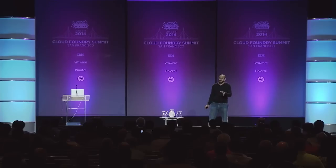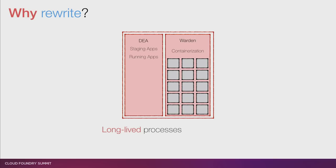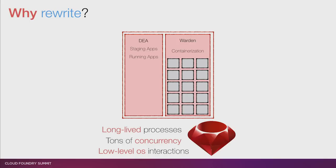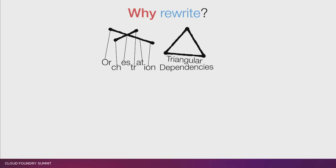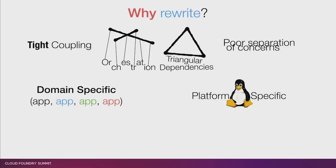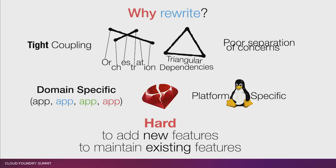Last problem before the happy things: the DEA and Warden are long-lived, long-running processes. They have tons of concurrency and lots of low-level OS interactions, and they're all written in Ruby. When you do something like this in Ruby, Ruby begins to crack, and we've been experiencing that pain. So to summarize why we're doing this rewrite: the problem of orchestration, triangular dependencies, tight coupling, poor separation of concerns, domain and platform specificity, and Ruby barely staying alive — all of this has made it hard to add new features and maintain existing ones.